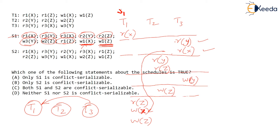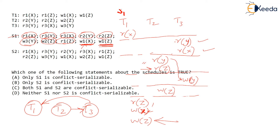There is no other conflict for read X of T3. Next, read Y of T2 — what does this conflict with? It conflicts with write Y of T3. No other operation conflicts with this, so we draw an edge from T2 to T3. The next operation, read Z of T2, conflicts with write Z of T1, giving an edge from T2 to T1.